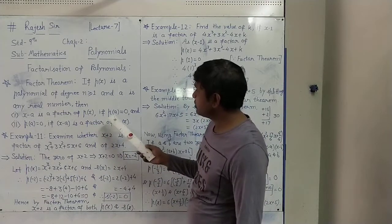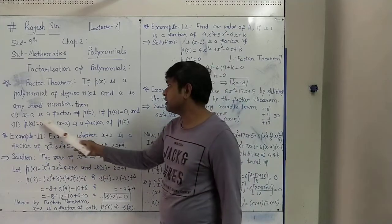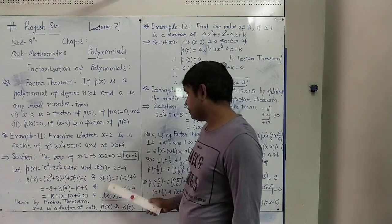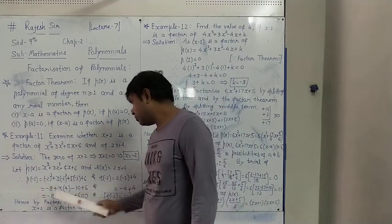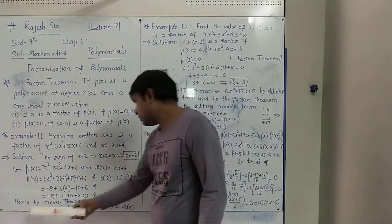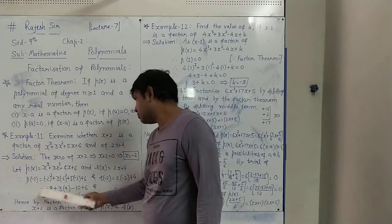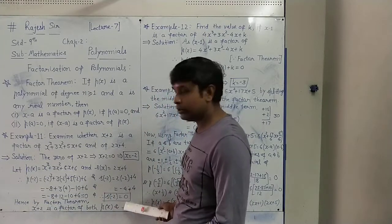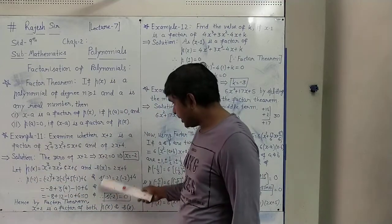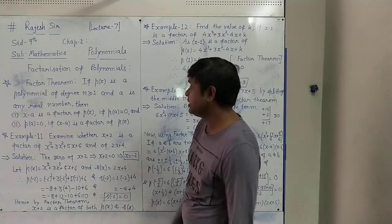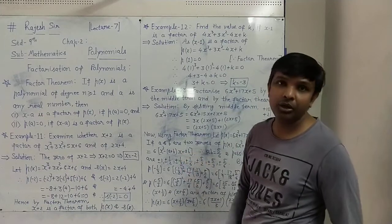So by the Factor Theorem, if P(a) equals 0 then x minus a is a factor. Since P(minus 2) equals 0 for both, x plus 2 is a factor. Hence by the Factor Theorem, x plus 2 is a factor of P(x) as well as S(x) — both. This way we can check by the Factor Theorem whether the given expression is a factor of the given polynomial or not.